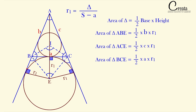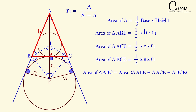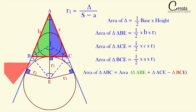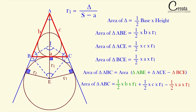So we have the areas of these three triangles. The area of triangle ABC equals the area of triangle ABE plus the area of triangle AEC minus the area of triangle BCE. Substituting in, we get: area of triangle ABC is equal to half into b·r1 plus half into c·r1 minus half into a·r1.